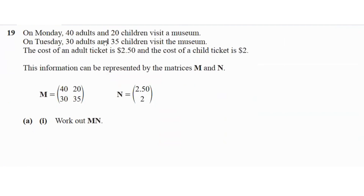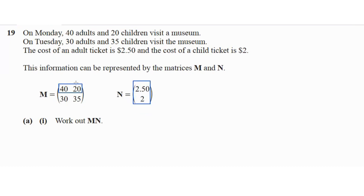On Monday, 40 adults and 20 children visit a museum. On Tuesday, 30 adults and 35 children visit. The cost of an adult ticket is $2.50 and a child ticket is $2.00. This information is represented by matrices M and N. To work out M times N, multiply the first row with the column, then the second row with the column.